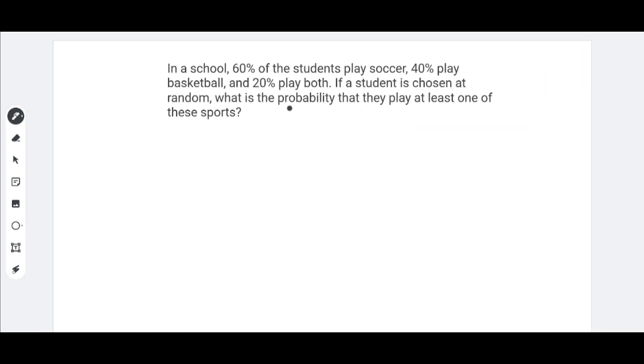In a school, 60% of the students play soccer, 40% play basketball, and 20% play both. If a student is chosen at random, what is the probability that they play at least one of these sports?